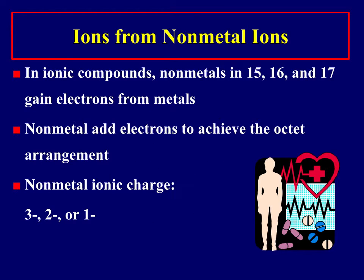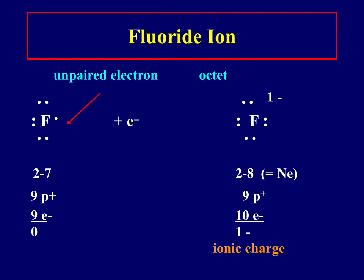All right, in ionic compounds, non-metals in groups 15, 16, and 17 gain electrons. So that's 5A, 6A, and 7A. And non-metals add electrons to achieve the octet arrangement. And those charges are 3 minus, 2 minus, or 1 minus depending on how many electrons they gained. So here's an example of that math for fluorine. And because it's an ion, we call it fluoride. So the unpaired electron, this is fluorine, but now that we've gained an electron, this is fluoride.